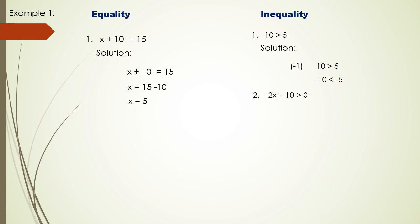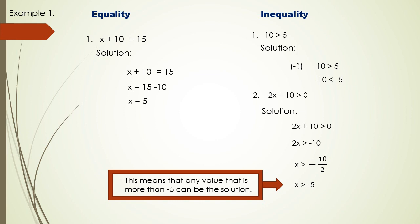For another inequality example, we have 2x + 10 > 0. Subtracting 10 from both sides: 2x > −10. Dividing by 2: x > −10/2, which means x > −5. Therefore, any value that is more than −5 can be a solution.